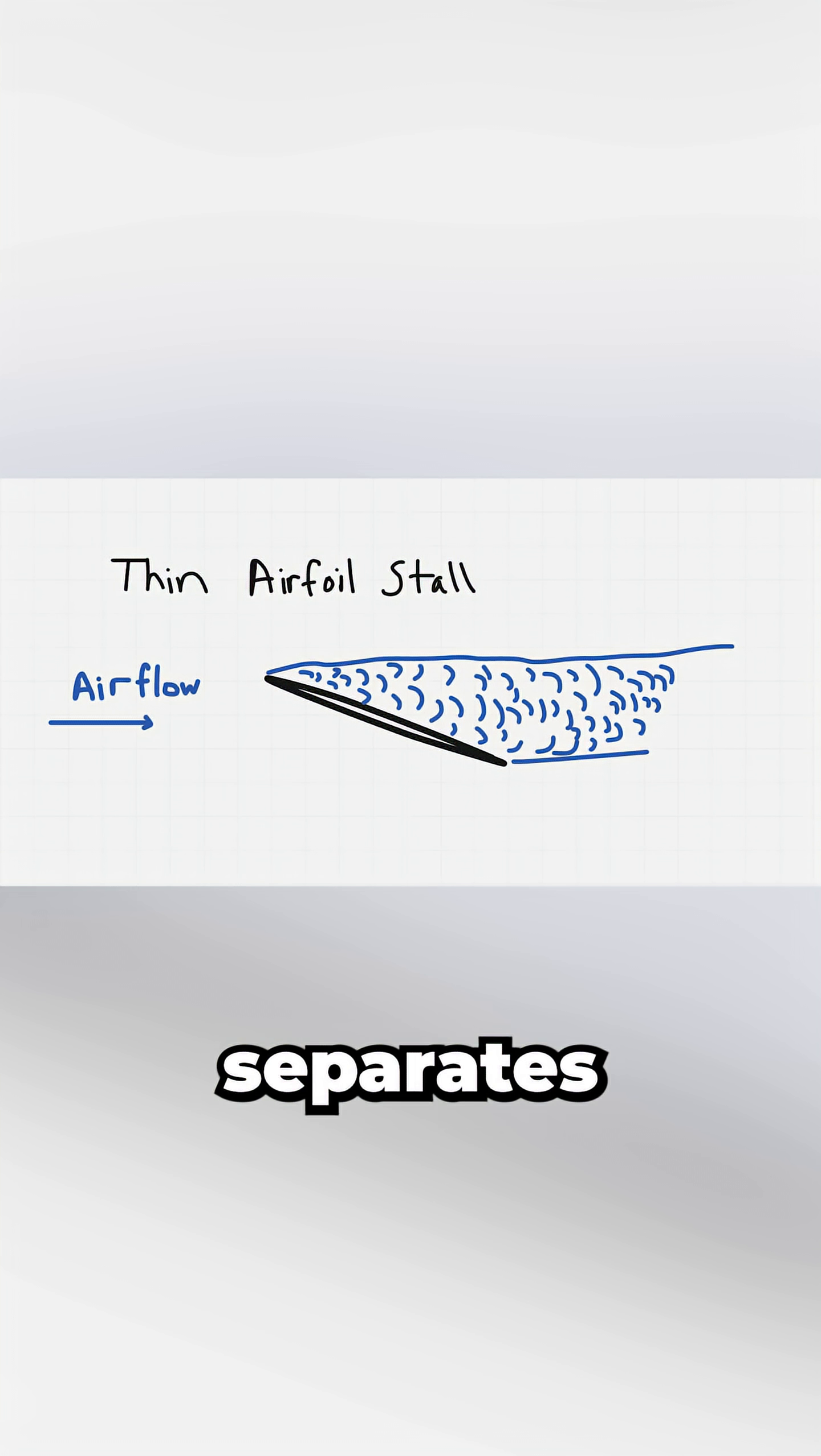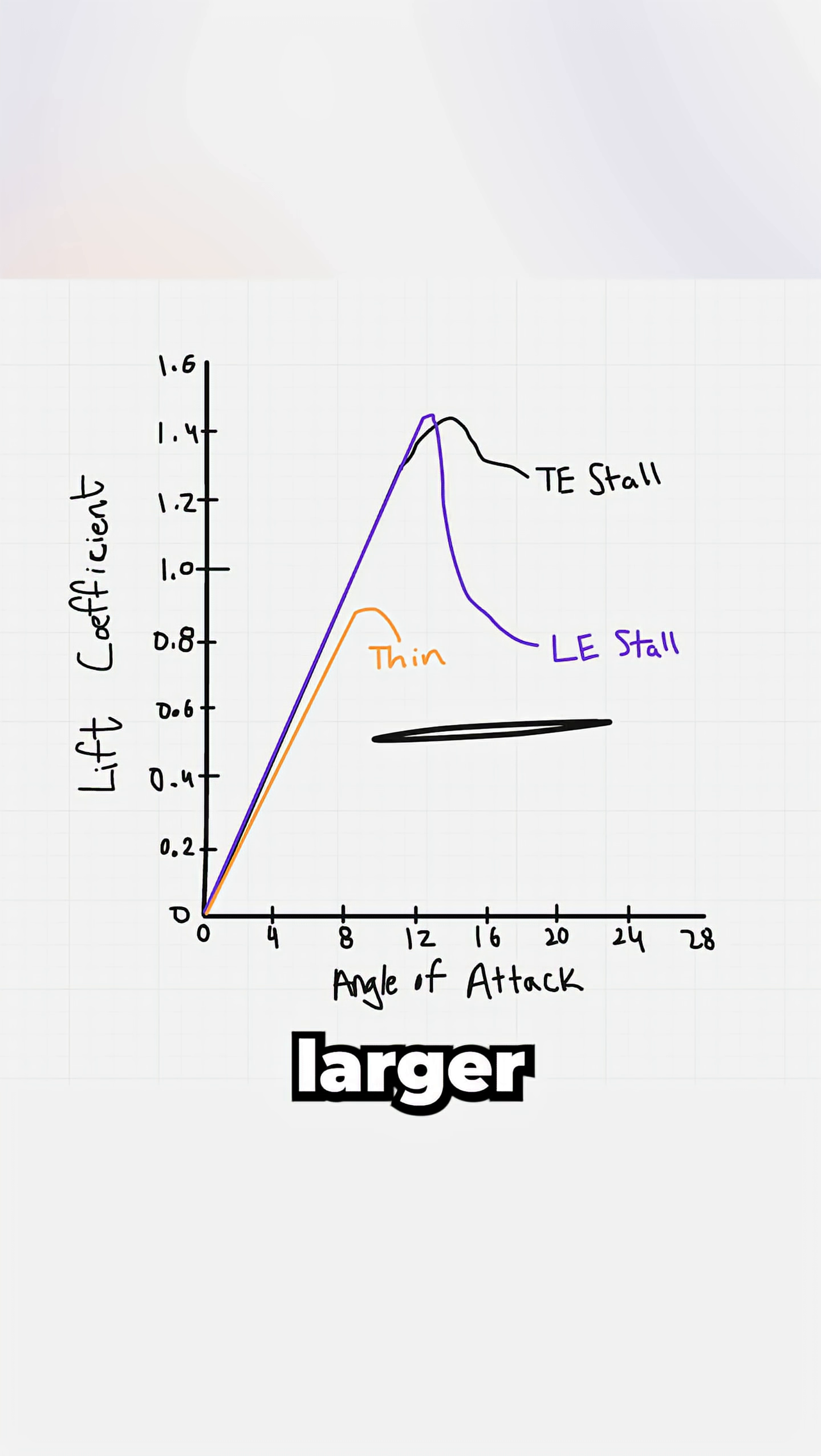Beyond a certain point, the flow separates over the entire airfoil. The lift loss is gradual but the pitch down changes are larger.